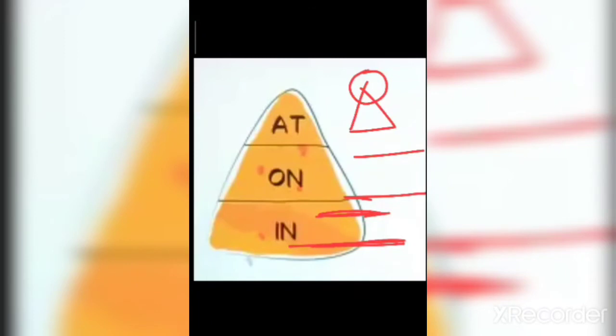Next is 'on'. आप लोग 'on' कहाँ use करेंगे? 'On' का area medium है। यह हमारा 'at' का area था, जिसके अंदर specific point given है, so that's why we use 'at' on a specific point. 'On' का area medium है — जब पूरे बड़े area में से कोई छोटा सा part given होगा, वहाँ आप 'on' use करेंगे।